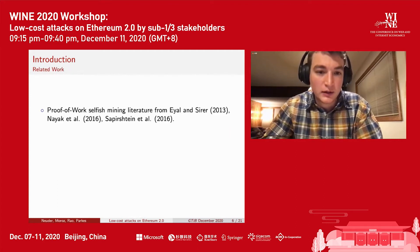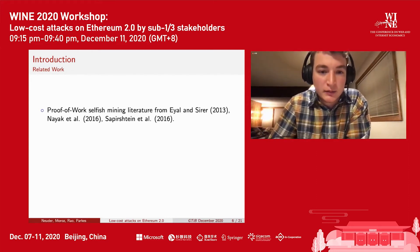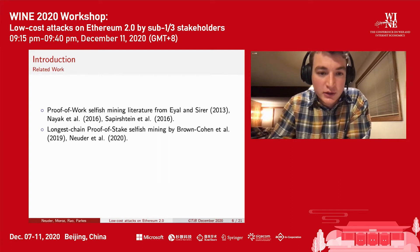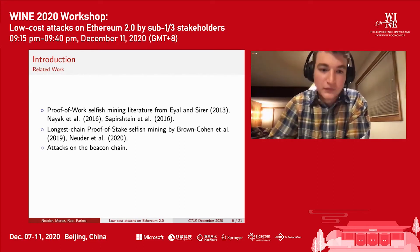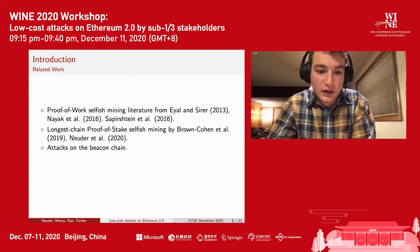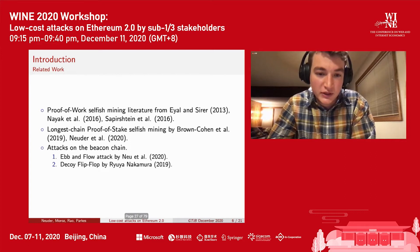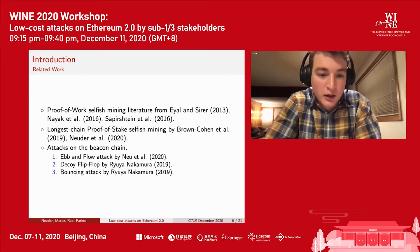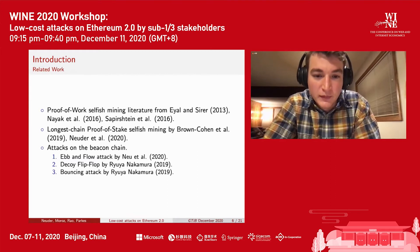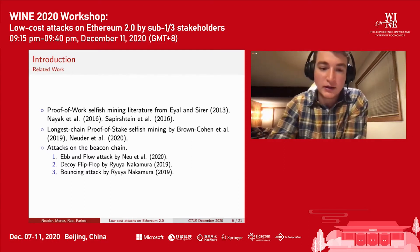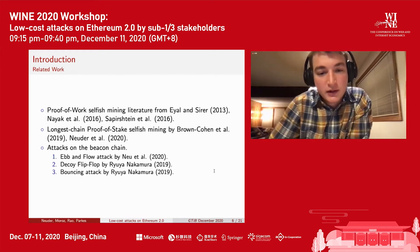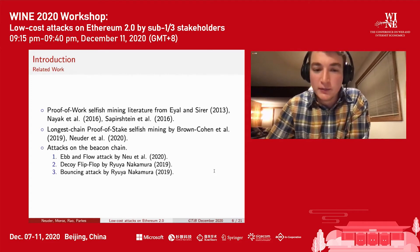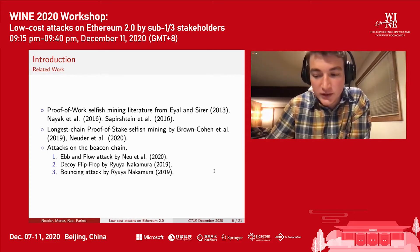A quick note on related work: this work is largely inspired by the proof of work selfish mining literature, as well as the longest chain proof of stake selfish mining literature. There are also a number of attacks presented on the beacon chain, including ebb and flow, decoy flip flop, and bouncing attack. Our attacks aim to accomplish similar things but via a completely different method. Notably, these prior attacks have been addressed by the Ethereum foundation in the protocol spec, and those fixes don't have any impact on our attacks.